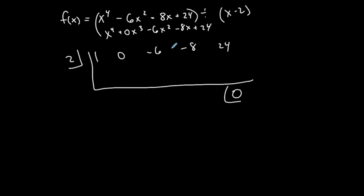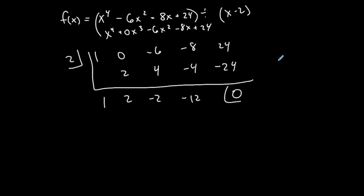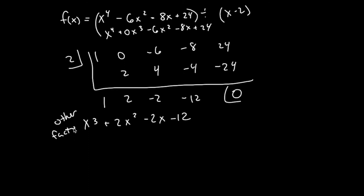Performing synthetic division: bring down the first number, multiply diagonally, add vertically — repeating through all coefficients. The remainder is zero as expected. Starting from a fourth degree polynomial, this gives a third degree polynomial as the other factor. The problem is this factor is not a quadratic — it's still a third degree — so I need to do synthetic division again with another real zero to reduce it further to a quadratic.